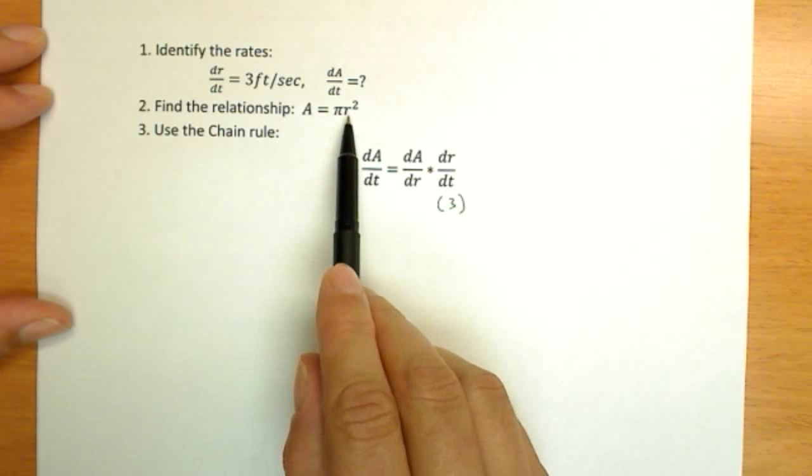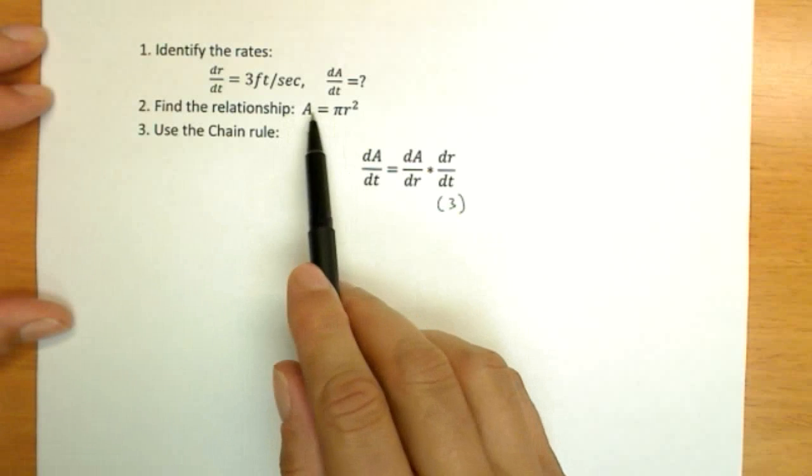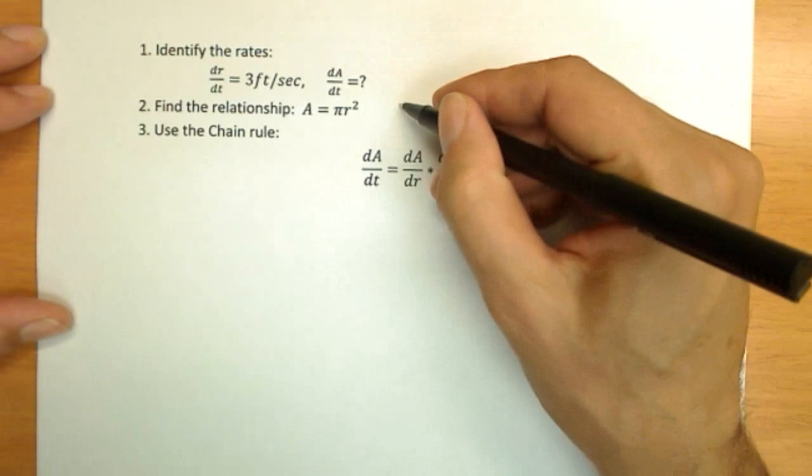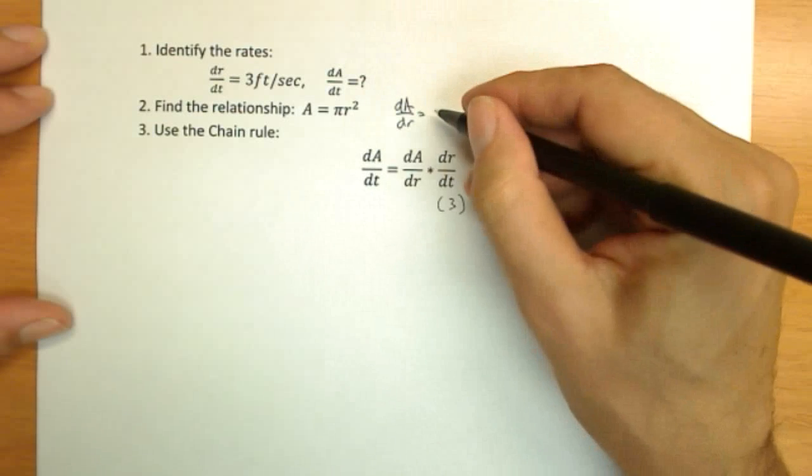But dA/dr is very easy to find. That's the derivative of A with respect to r. We may be more used to seeing x's or something, but it doesn't matter. Same type of derivative. So dA/dr, very easy to find from the relationship, is 2 pi r.